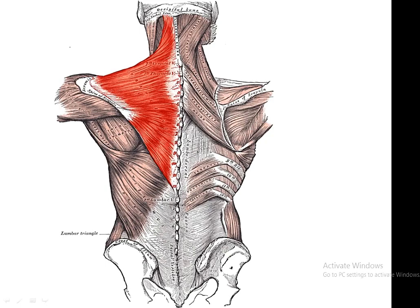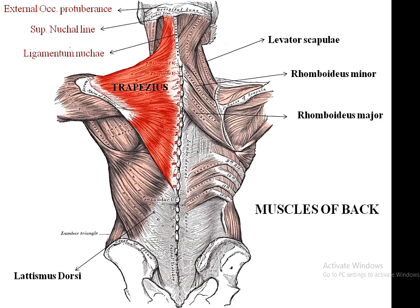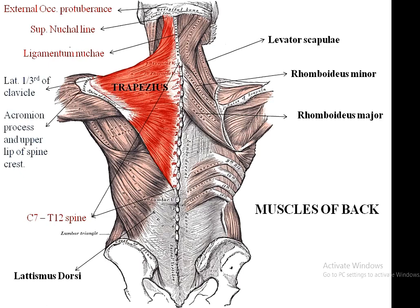The muscles of the back are trapezius, latissimus dorsi, levator scapulae, rhomboidus minor and rhomboidus major. The trapezius originates from the external occipital protuberance, the medial side of the superior nuchal line, the ligamentum nuchae, and from C7 to T12 spines. It inserts via its upper fibers into the lateral one-third of the clavicle, the middle fibers into the acromion process and the upper lip of the crest of the spine of scapula, and the lower fibers into the deltoid tubercle on the medial side of the spine of the scapula.